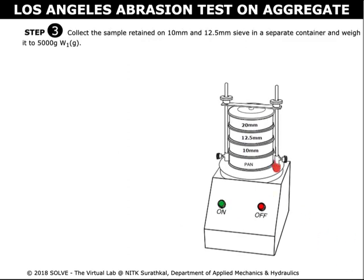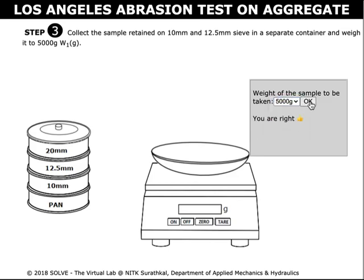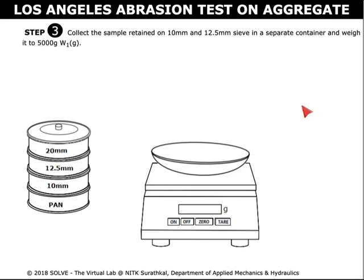Remove the sieves from the mechanical shaker. Click on the correct answer to proceed to the next step. Switch on the weighing machine with the container placed in it. Click on the tare to clear the weight.